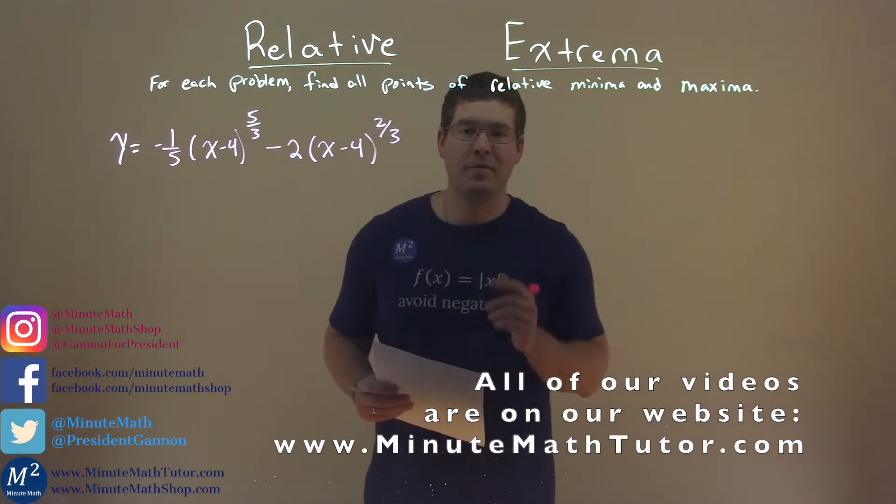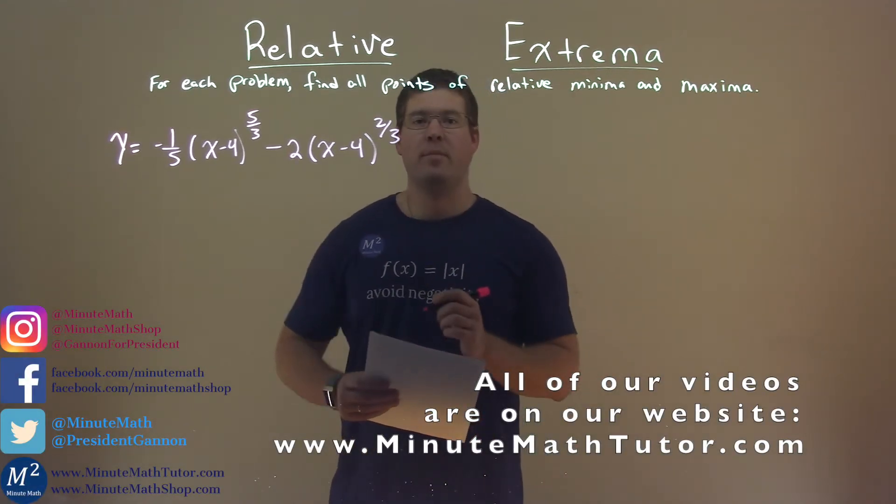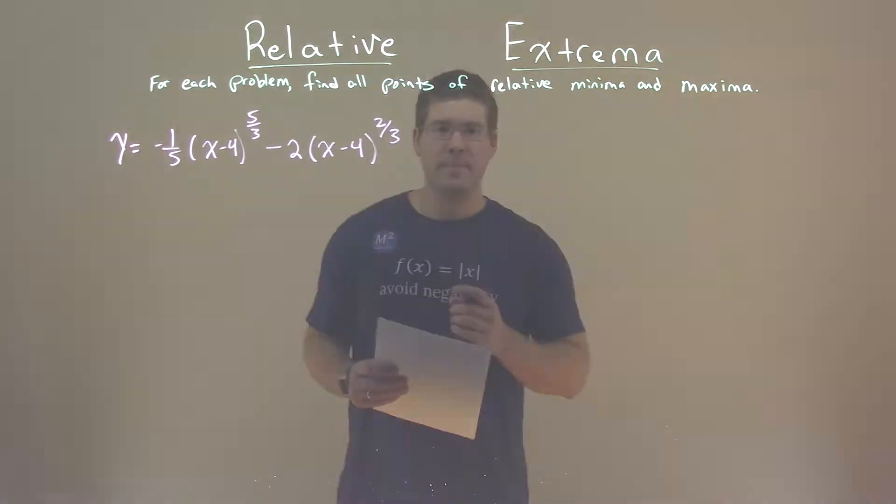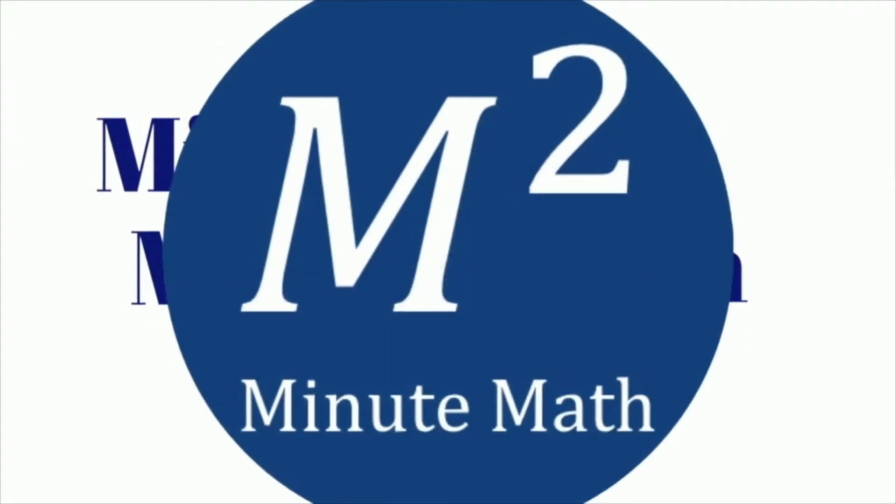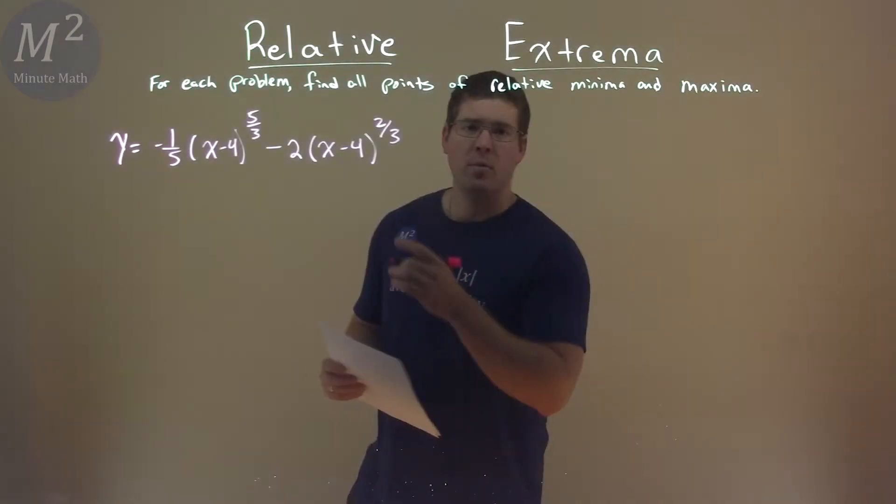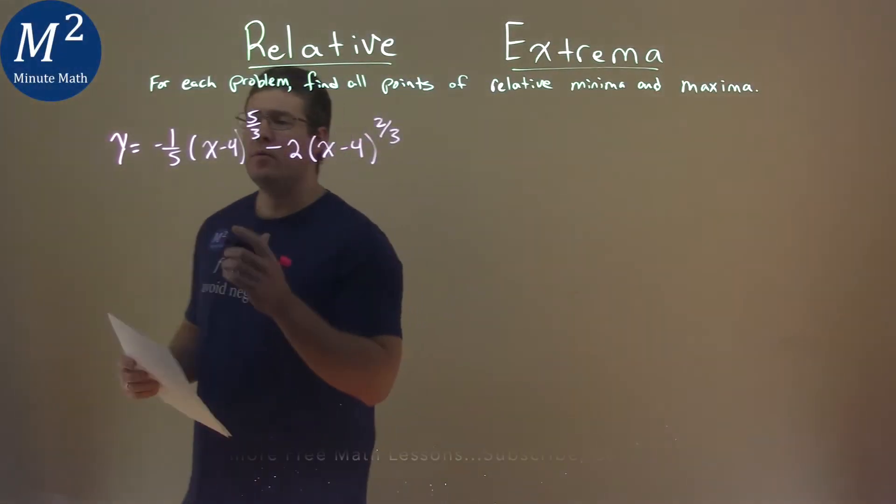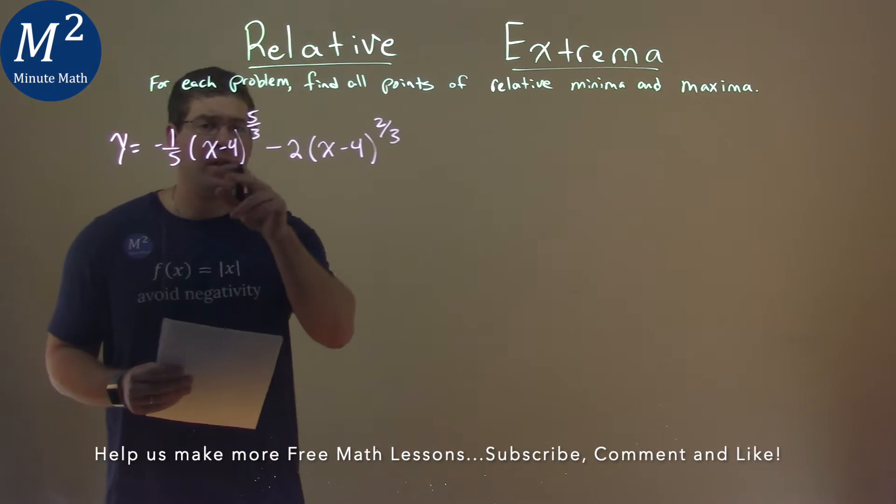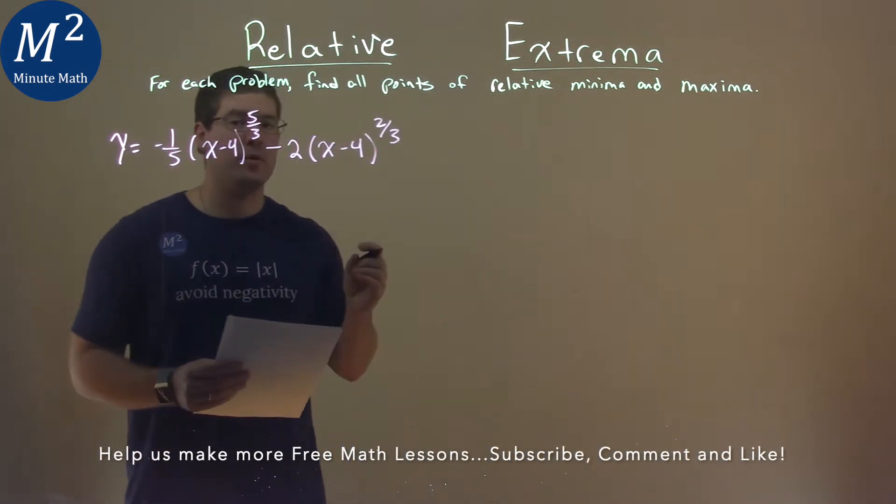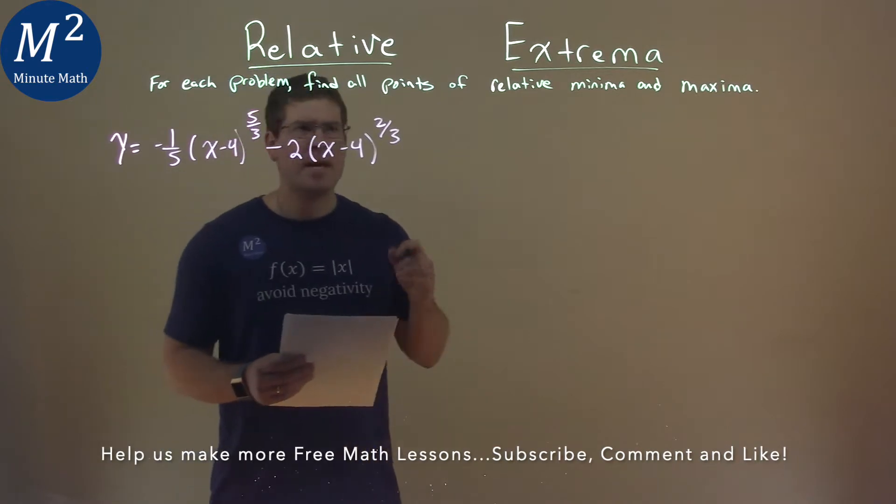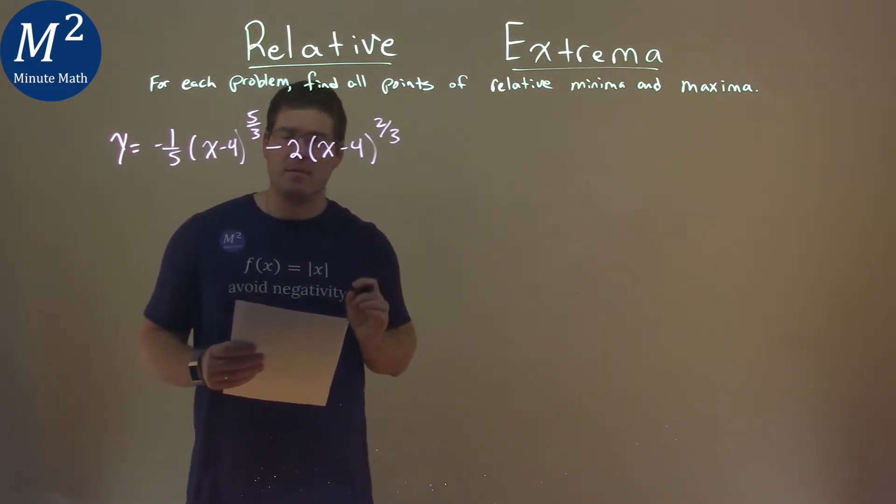Hi, I'm Sean Gannon, and this is Minute Math, and today we're learning about relative extrema. We're given this problem right here: y equals negative one-fifth times (x-4) to the five-thirds power minus two times (x-4) to the two-thirds power, and we need to find the points of relative minima and maxima.